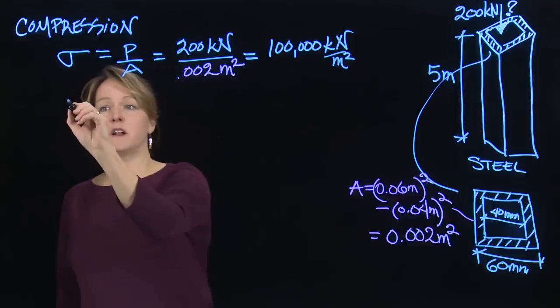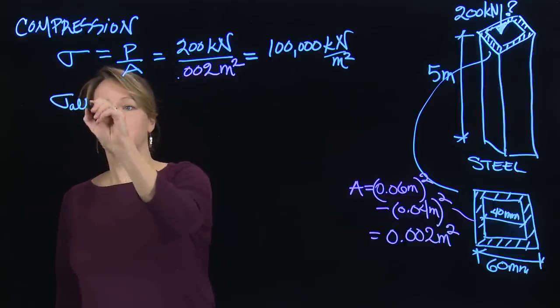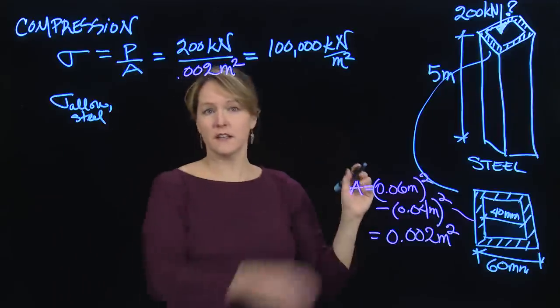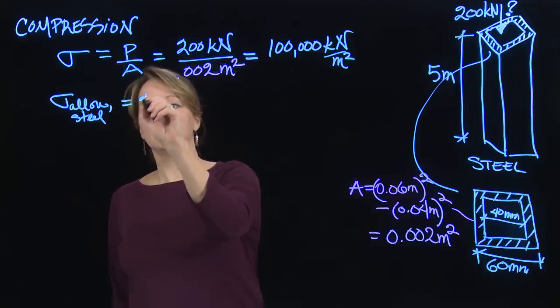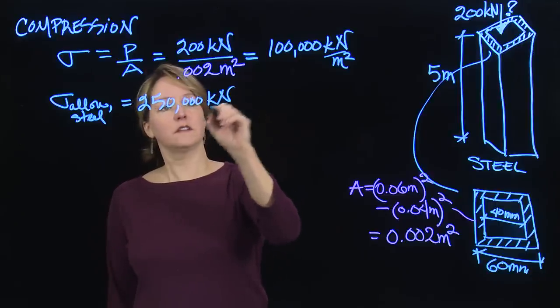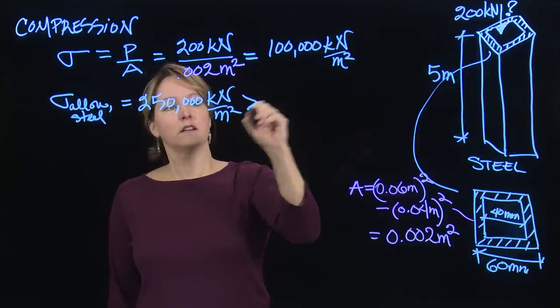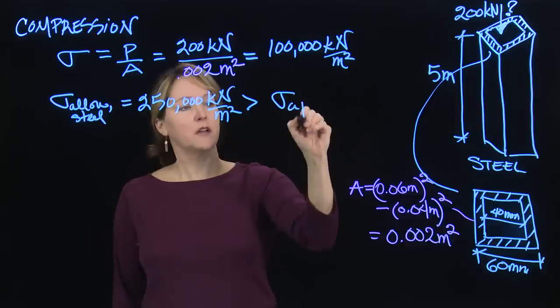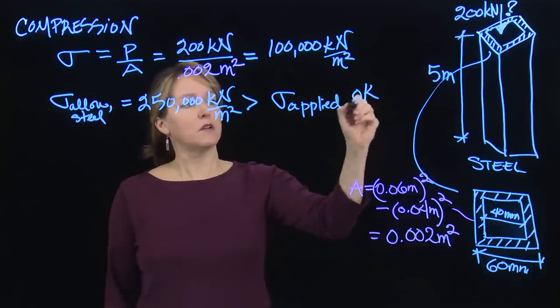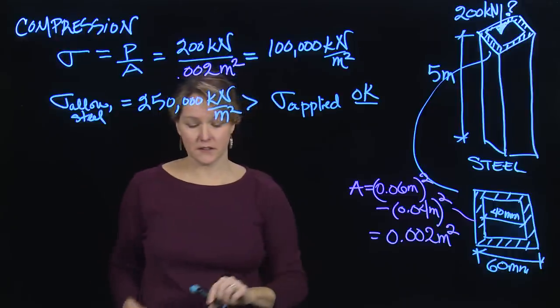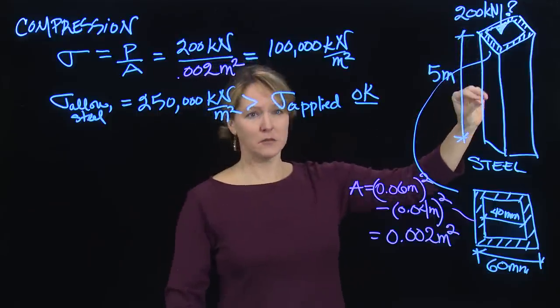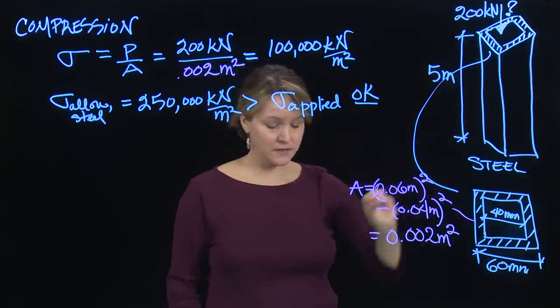I want to make sure that's okay, so I'm going to want to look up the allowable stress for steel. So I want to know how much stress steel can handle, and that allowable stress is 250,000 kilonewtons per meter squared. So it's greater than my stress applied. So I expect my column to be okay if I'm considering compression. So this column will not fail by compression. It will not yield, and that's good news.